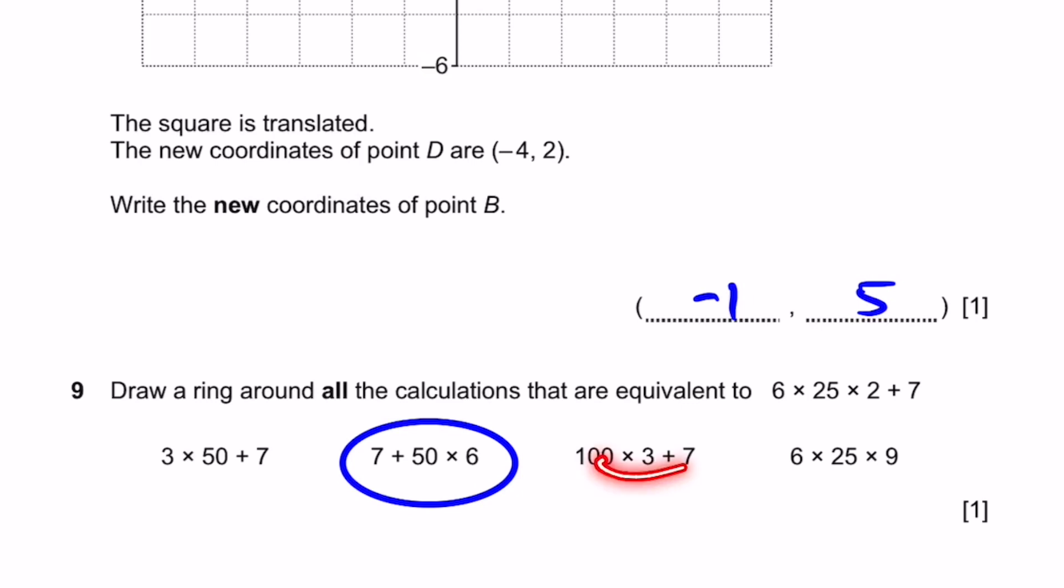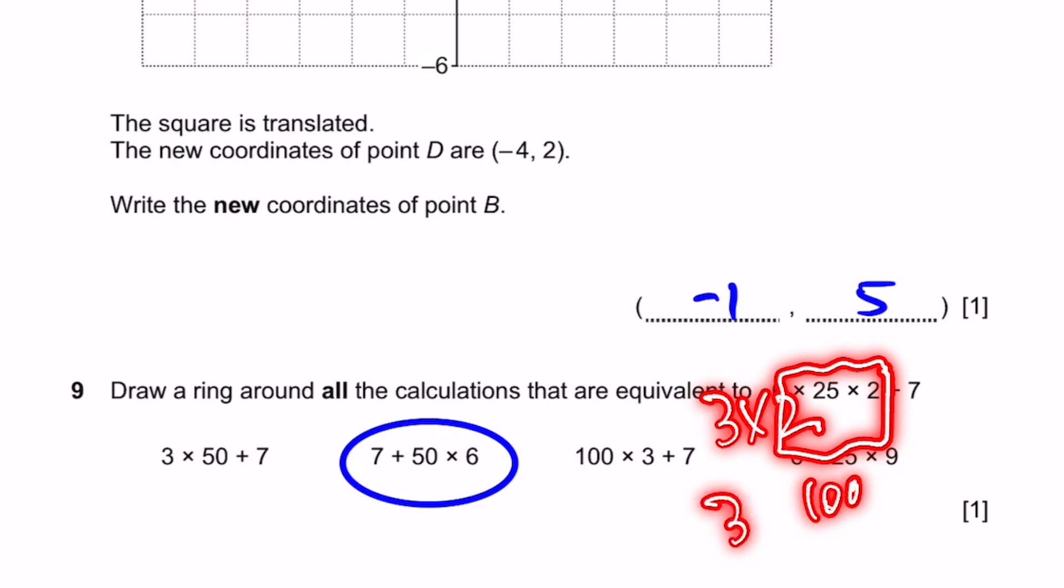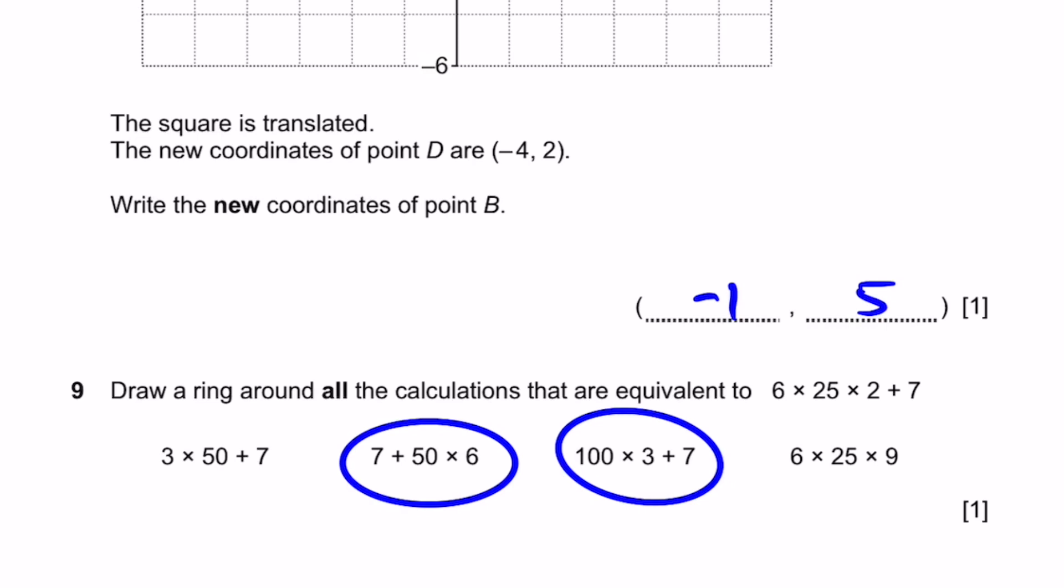Now, 100 times 3 plus 7. Now, 6 can be written as 3 times 2. Now, 3 times 2 times 25 times 2. We can do this to get 100. Over here, 2 times 25 times 2 is 100. Now, 3 times 100 plus 7. And this is the same thing as 100 times 3 plus 7. So, it's equivalent. Now, 6 times 25 times 9. Well, as we know, due to the BODMAS rule which I just explained, we do multiplication first, not addition. So, we don't do 2 plus 7 equals 9 first. We do all of this first. Therefore, this is not equivalent. That's the answer.